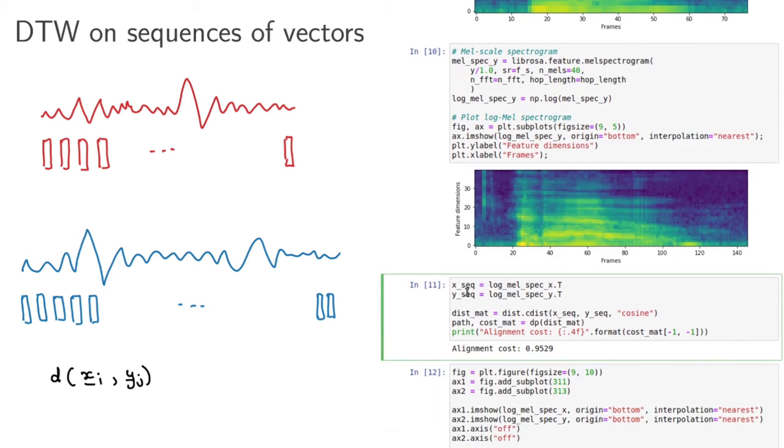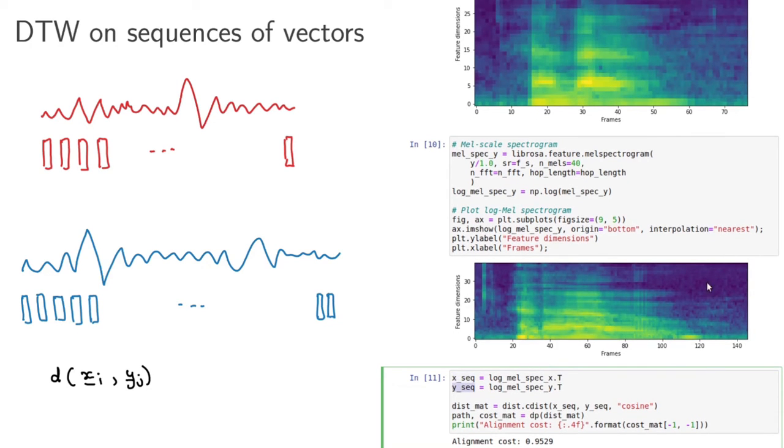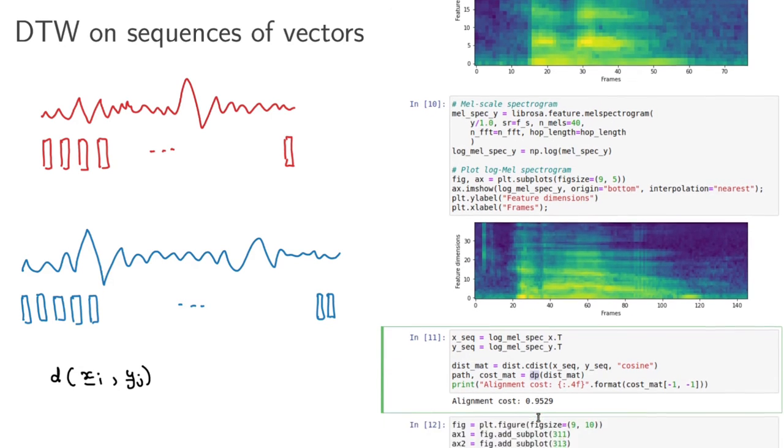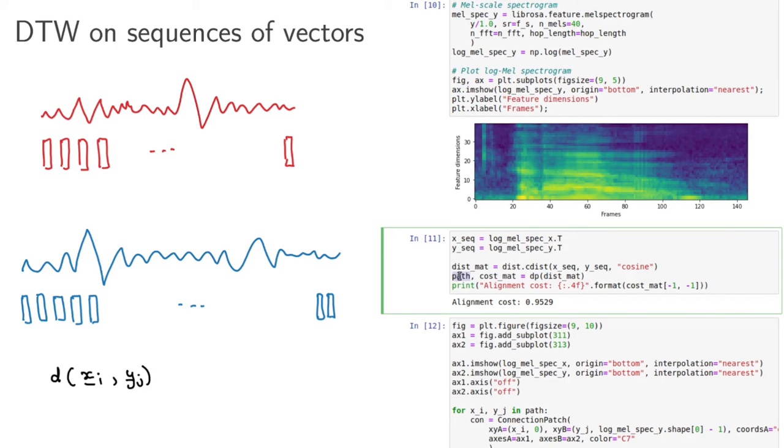So here I basically take the features. It's important here that I calculate the distance metric, the distance matrix between the two sequences. So I've got my X sequence here, I've got my Y sequence here. And then what I do is I calculate the cosine distance between each vector in the X sequence and each vector in the Y sequence. And that's then my distance matrix. I then actually pass in the distance matrix to exactly the same function that I used before. So just the same dynamic programming function. And from that, I get my cost matrix and my path that pops out. And I can look at the overall cost, which is that last element in my cost matrix. And this has an alignment cost of 0.9529. And it's a little bit hard to say how similar that is. You know, what does that mean? But if you've got multiple signals that you're comparing to one another, then maybe you can compare different alignment costs. We'll actually do that in a second.